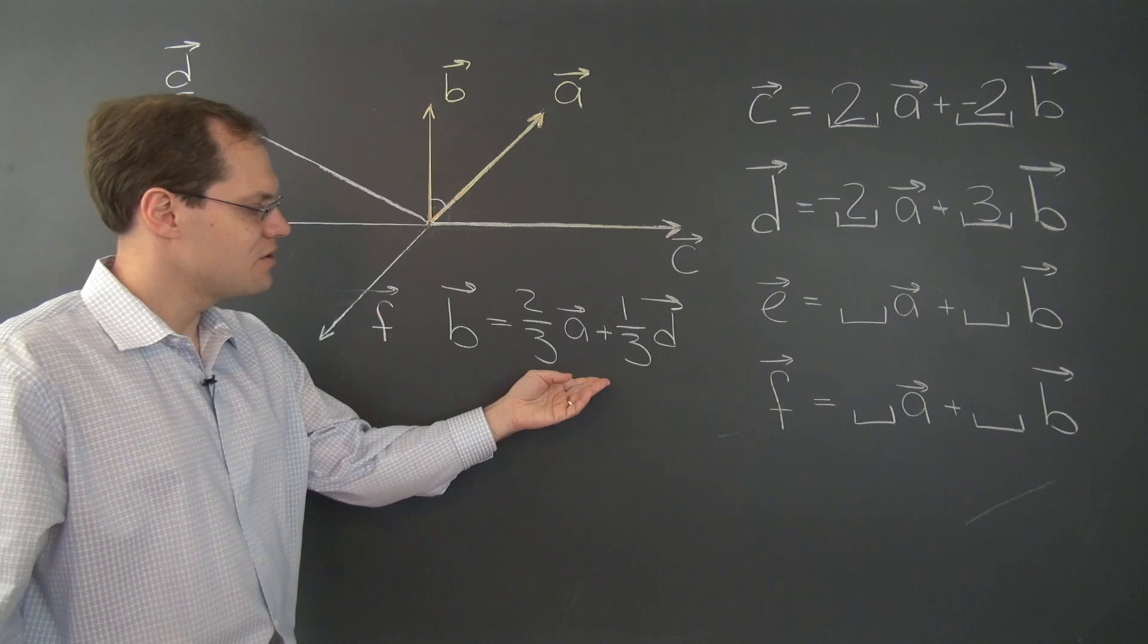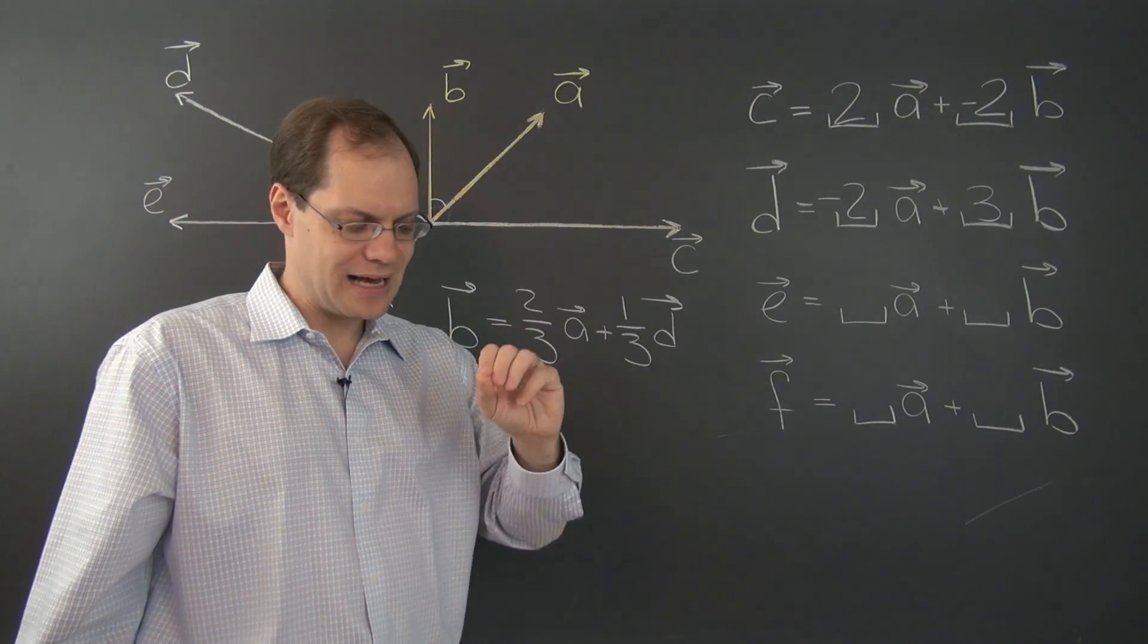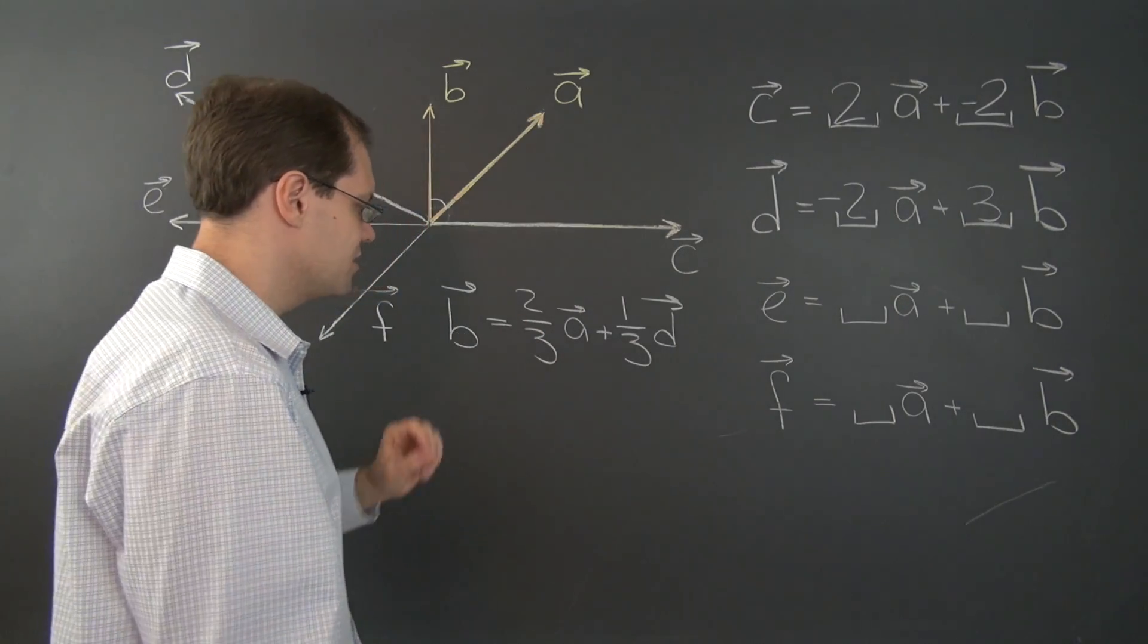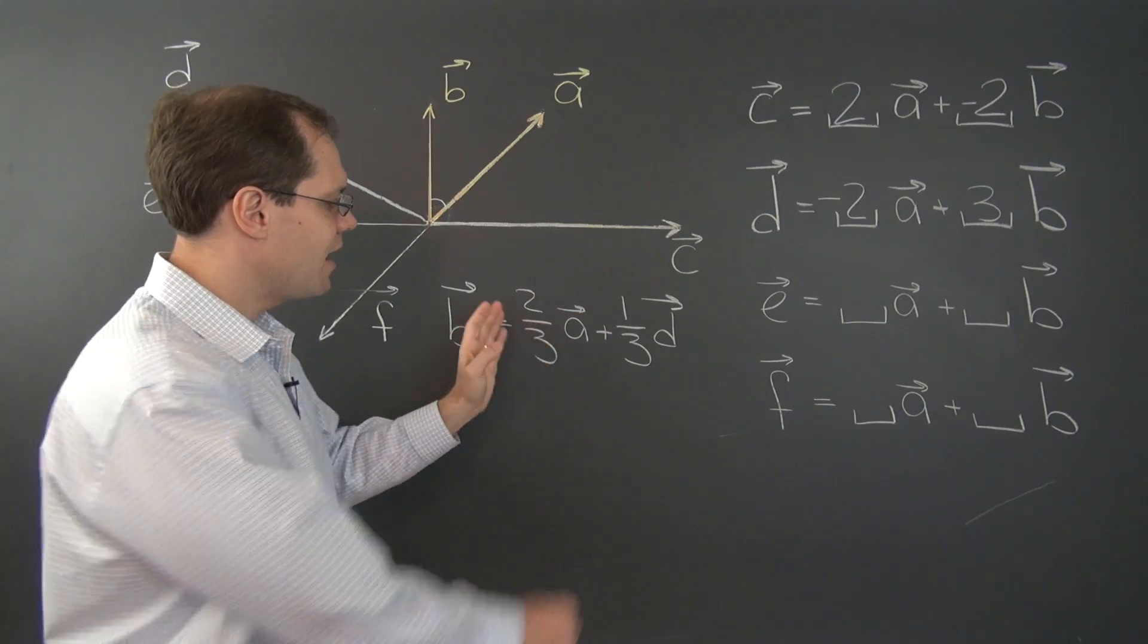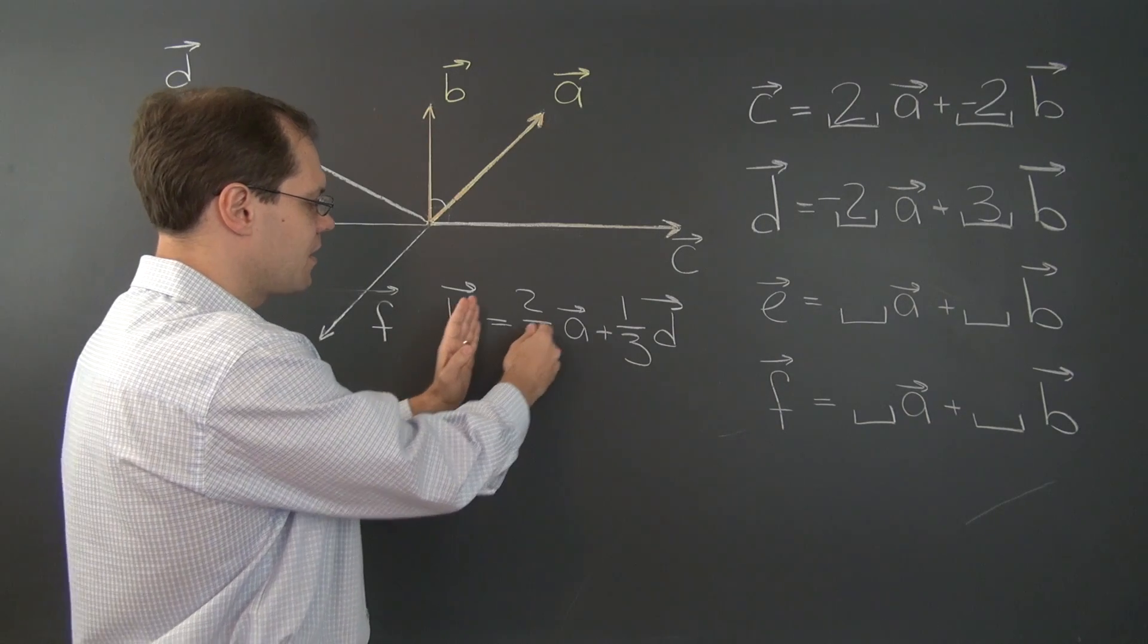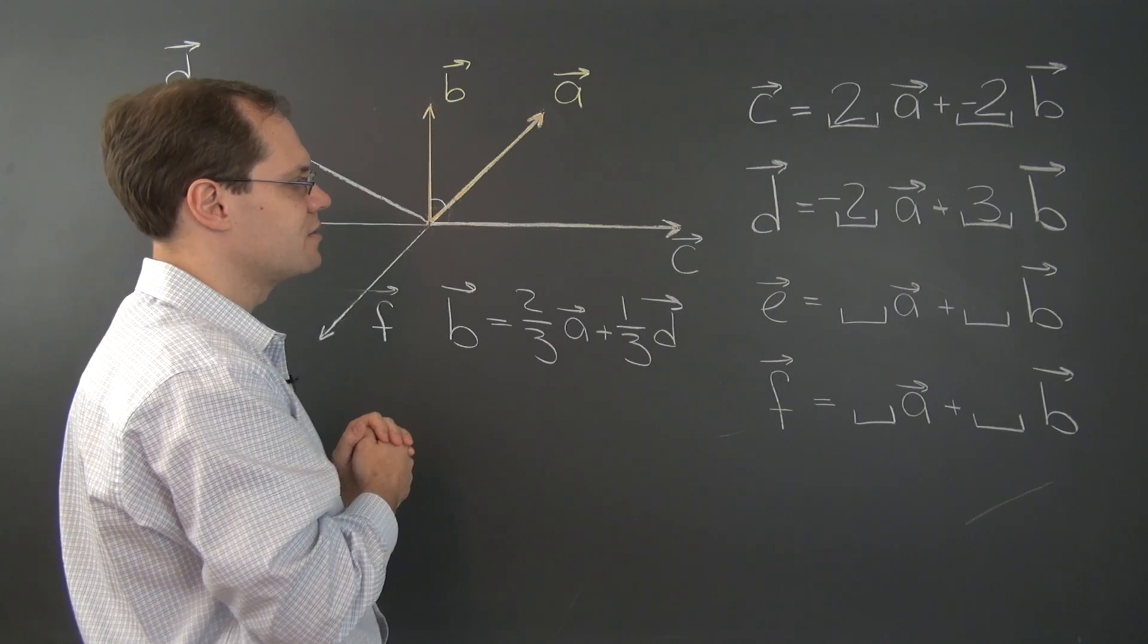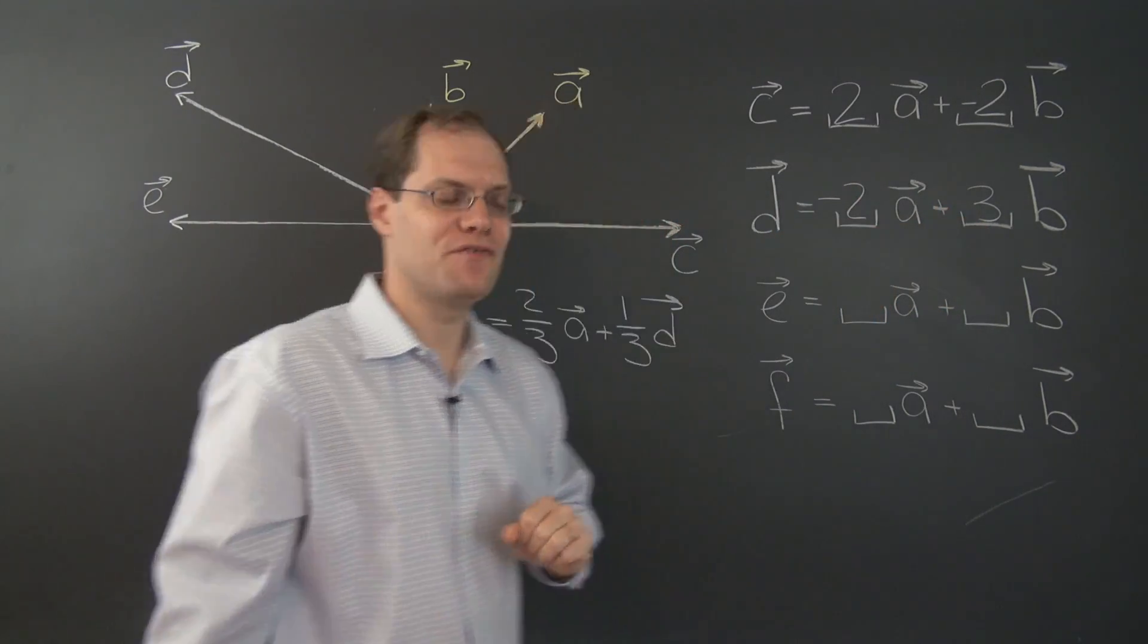So if you find yourself struggling with this just a little bit, it's a signal to go back and work with linear combinations a little bit more. Now, from here, we can get d rather easily, algebraically. Now, another example of algebra helping geometry. How would we do it? Multiply both sides by three and move this term to the left-hand side. And what we're getting is that d equals 3b minus 2a, 3b minus 2a, exactly as before.